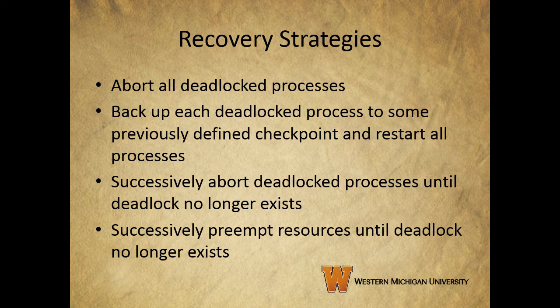For the last two strategies, the selection criteria could include: the process with the least amount of processor time consumed so far, the least amount of output produced so far, the most estimated time remaining, the least total resources allocated so far, or simply the process with the lowest priority. Keep in mind that some of these quantities are easier to measure than others — estimated time remaining is particularly difficult to measure and very easy to get wrong.